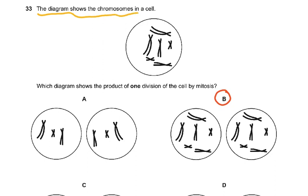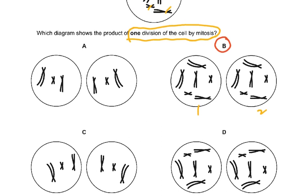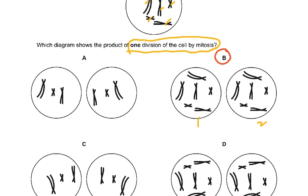In question 33, the diagram shows chromosomes in a cell — there are 6. Which diagram shows the product of one division of the cell by mitosis? After the first mitotic division you need two cells, so C and D with four cells were wrong. In A and B there were two cells, but one was incorrect because the chromosome number must remain the same. Mitosis produces two genetically identical daughter cells from the original cell.